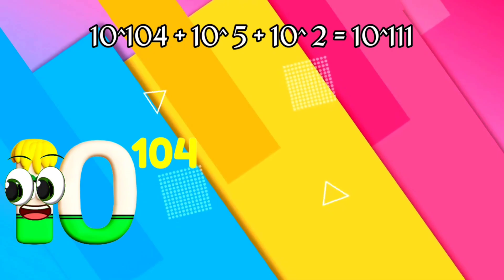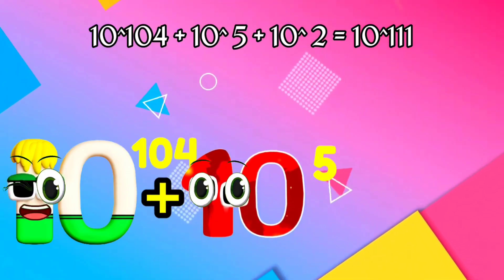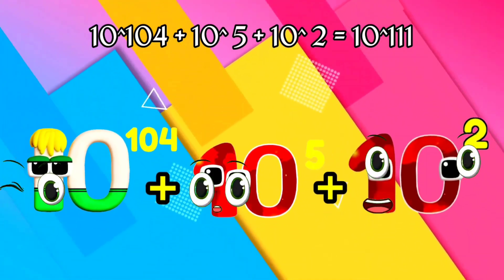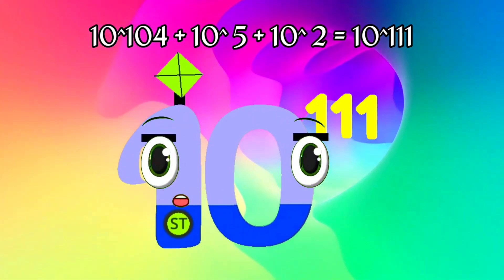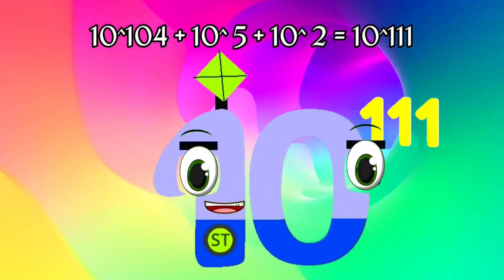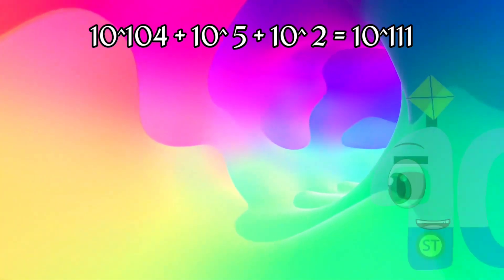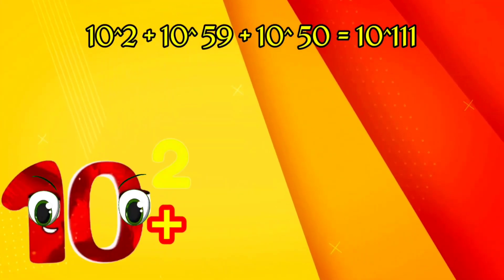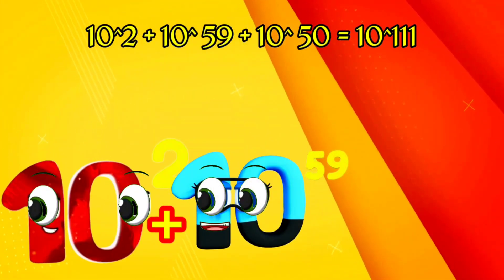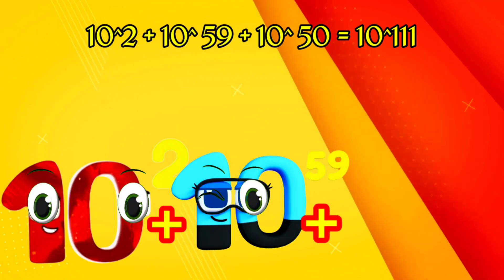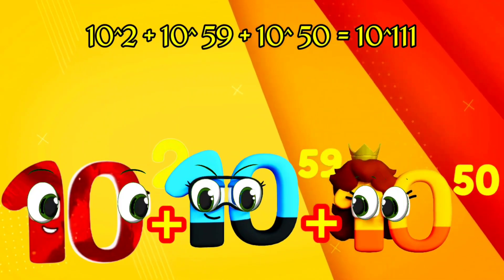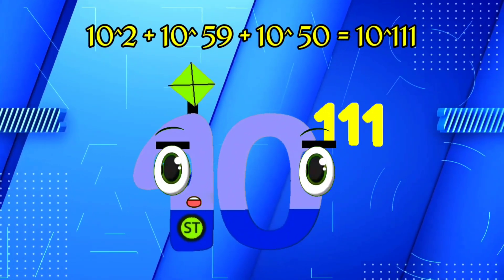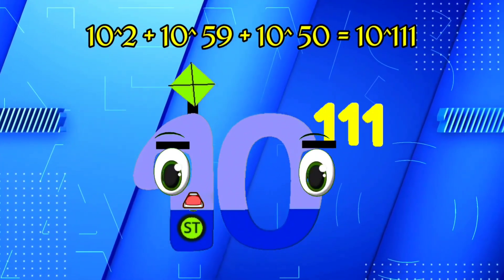I am Googol with 100 zeros, plus I'm 100 with two zeros, equals I am Googol with 100 zeros. 100 octodesillion plus 100 quindicillion equals quatuovigintillion — and I have 70 zeros.